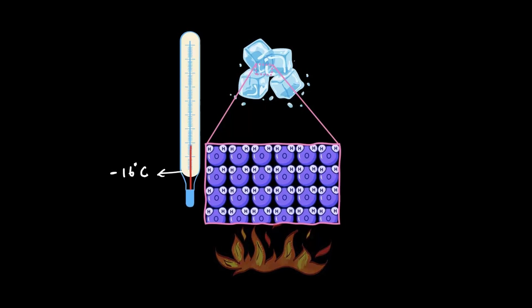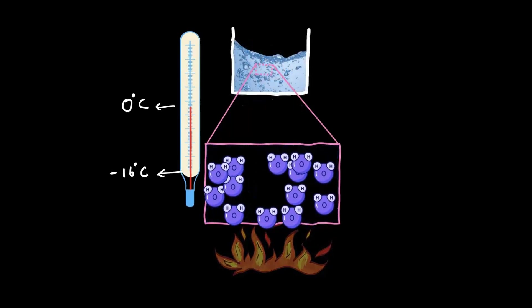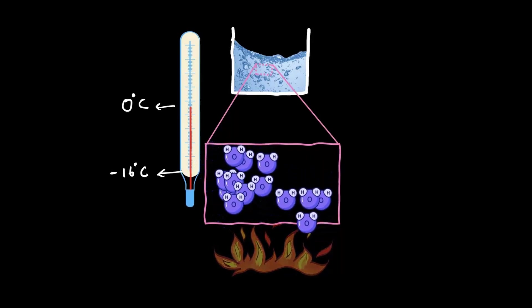The more heat we add, the more intense these vibrations become. And when the temperature reaches zero degrees, something interesting happens. The particles can't hold on to each other tightly anymore because they are moving too energetically. At this point, they start to break apart, loosening up and becoming freer to move around.